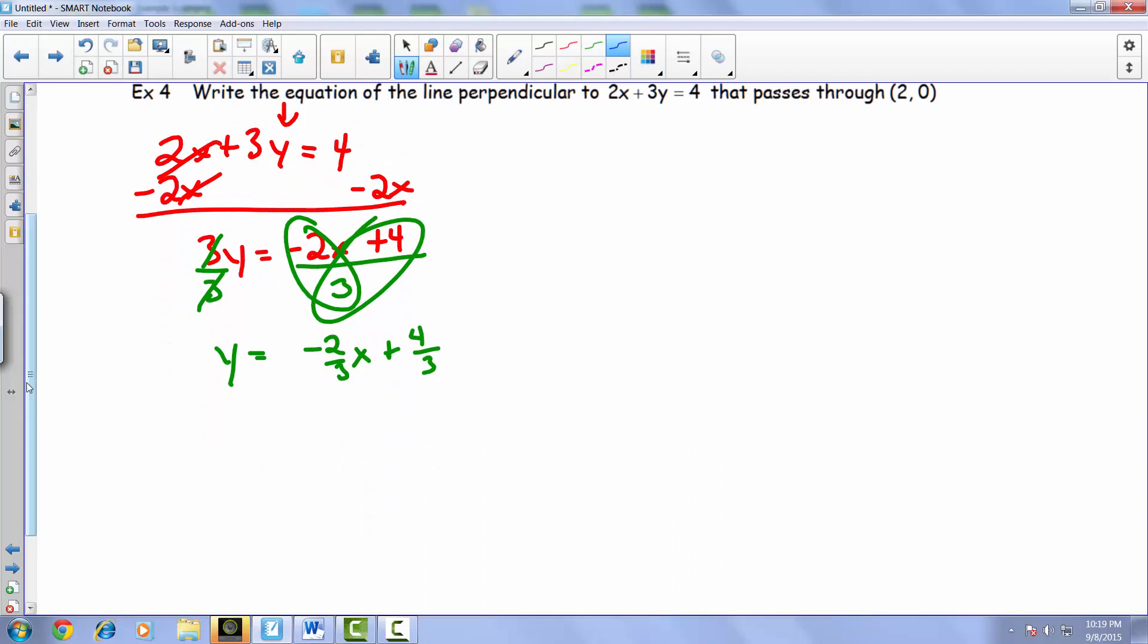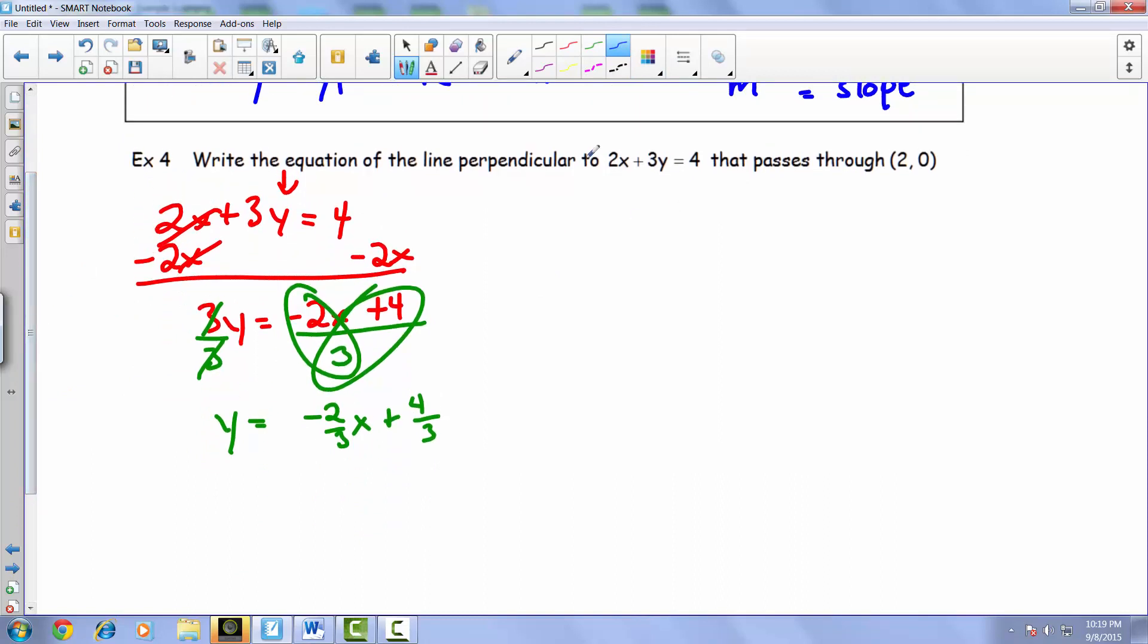When we're looking at the equation that is perpendicular with this line—keep in mind this line is the same thing as this line, we've just put it in y equals mx plus b form. We had to put it in y equals mx plus b form so that we could find and use the slope.